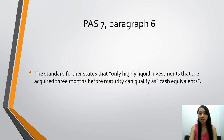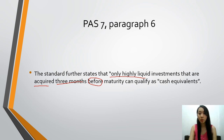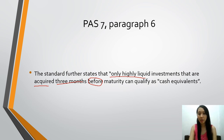The standard further states that only highly liquid investments that are acquired — please note this — three months before maturity can qualify as cash equivalents. So, highly liquid investments that are acquired, meaning purchased, three months before their maturity date, before they are due. I will give you an example later on.